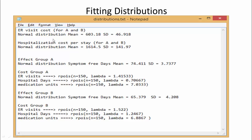The effect also follows normal distribution for both A and B. The ER visits, hospital days, and medication units for group A and B follow Poisson distribution and this is the corresponding lambda values for each variable.